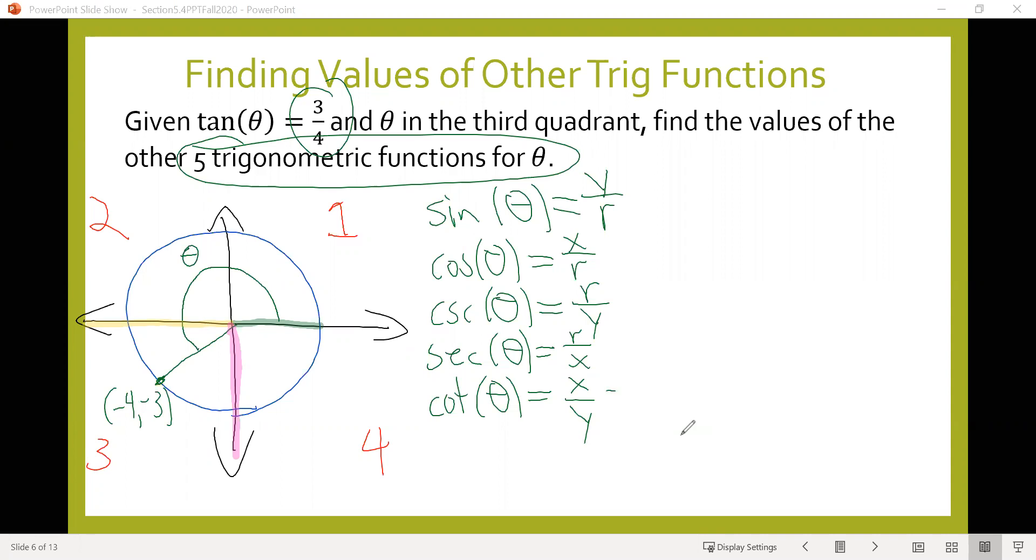We can find cotangent right away because we know x and y. The x value is negative four, the y value is negative three, so cotangent equals negative four over negative three, which gives us positive four-thirds. But what are we missing to find the rest? We need the value for r.